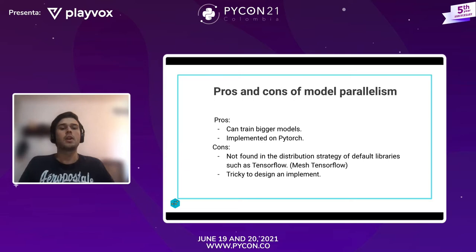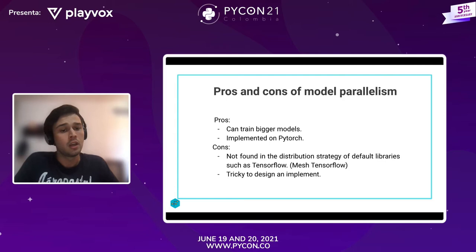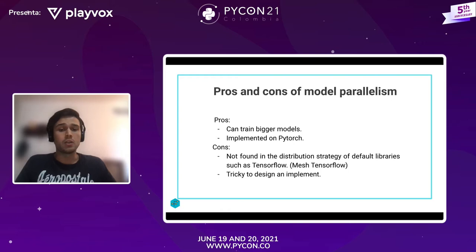El model parallelism tiene pros y contras. Uno de los pros es que se puede usar para entrenar modelos más grandes como Transformers, y tiene implementaciones en PyTorch. Pero tiene algunos contras: no se puede encontrar en la estrategia por defecto de TensorFlow para hacer parallelism, entonces hay que recurrir a otras librerías como Mesh TensorFlow. Además, es difícil de implementar y de diseñar.